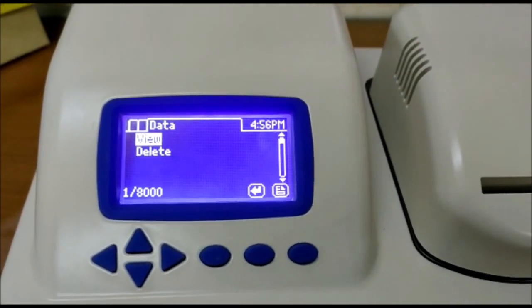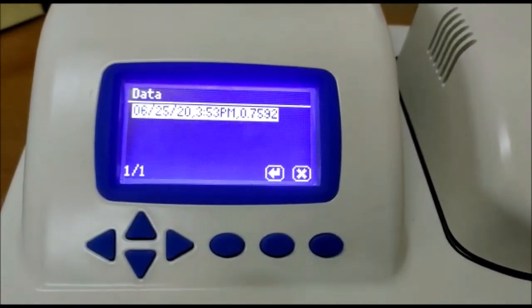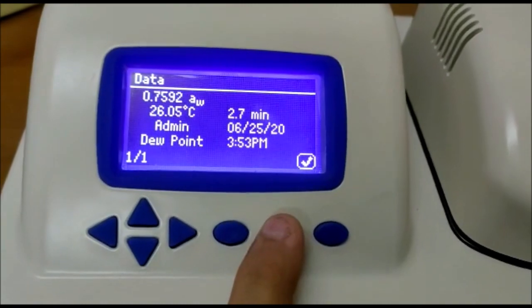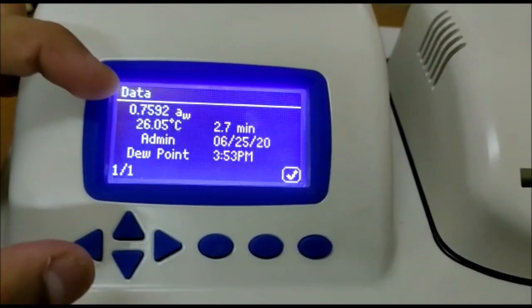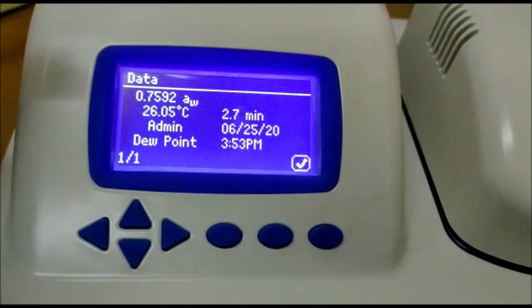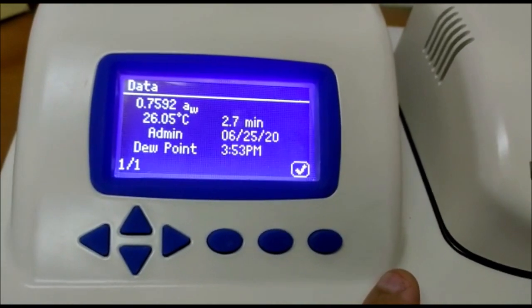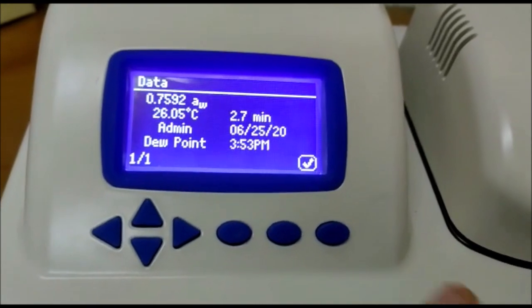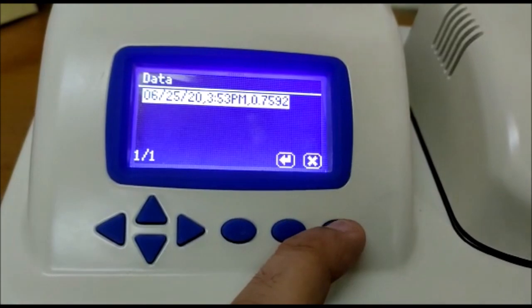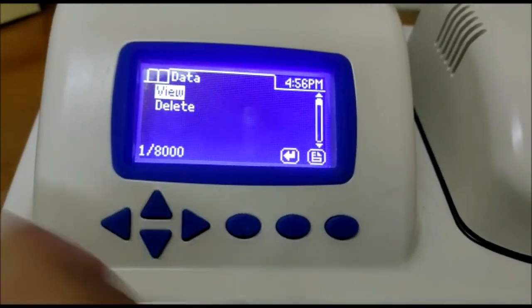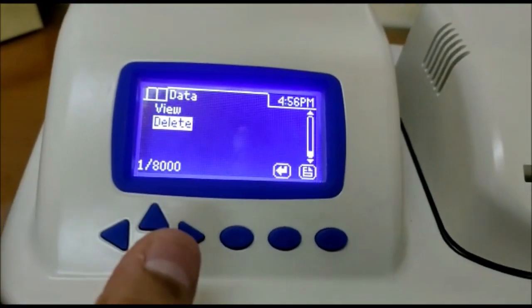I already mentioned that instrument can store 8000 data points. You can view the data date wise. And when you are saving the results, you can add annotations also. Here at the top, it will tell you about the sample which you have annotated during the test. It will give you information like water activity, at what temperature it was tested, test time, who did the test, admin or user, the date and which sensor you have used. And if you want to delete data, just come here and delete the entire data. No one can manipulate the data inside the instrument.